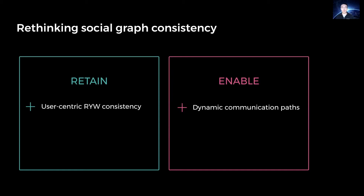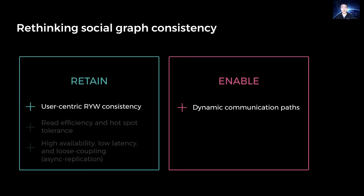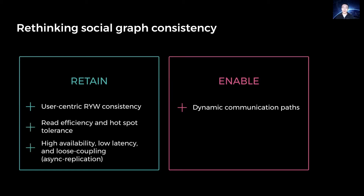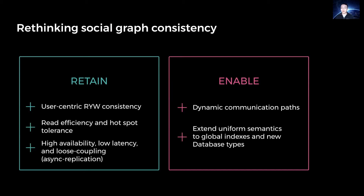These system evolutions led us to rethink social graph consistency. We want to continue to provide read-your-writes centered around end users, but we don't want to fix communication paths. We want to preserve the high efficiency, high availability, low latency, and hotspot tolerance of our data stores, as it is important for our read-heavy workload. We want to extend uniform semantics to global indexes and new data stores without sacrificing the loose coupling of our system. Our solution, FlightTracker, allows us to tackle both by decomposing the consistency problem.